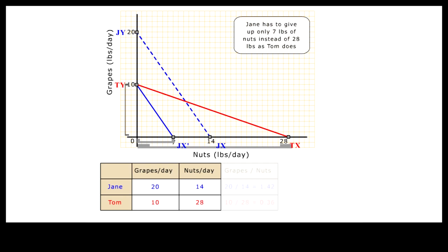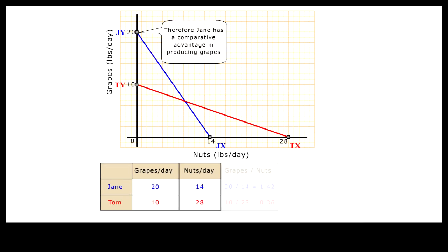For Tom, the red production function, he has to give up 28 pounds of nuts to produce the same 10 pounds of grapes. That is 21 pounds more nuts than Jane. Because of Jane's lower relative cost of producing grapes in terms of nuts foregone, we say Jane has a comparative advantage in producing grapes.